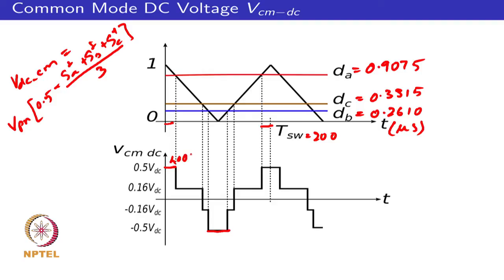For an 800 V DC bus, 0.5 VDC corresponds to 400 volts and 0.166 VDC corresponds to 133 volts. The transitions occur at the same intersection points: 9.25, 66.8, and 73.9 microseconds. The common mode DC bus voltage has a six-step structure in every PWM cycle. At each sharp transition, parasitic capacitances can be charged or discharged, causing ground currents in the overall system.